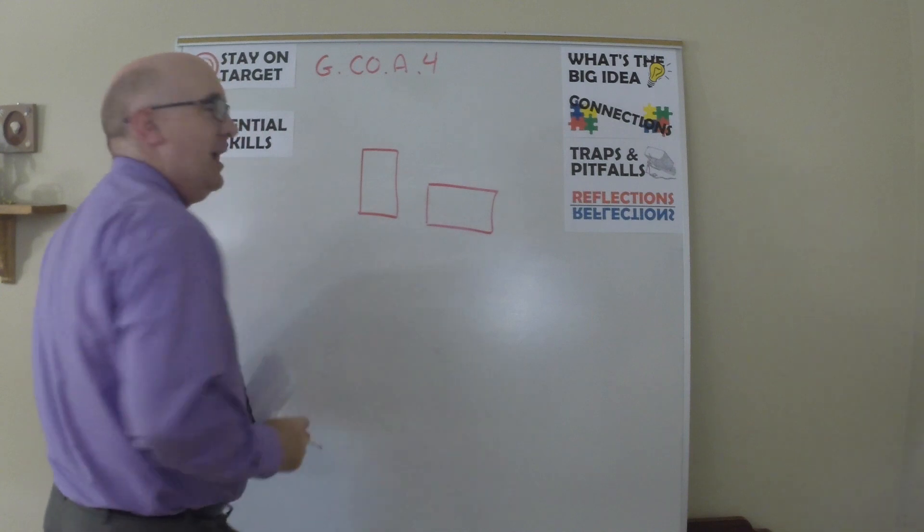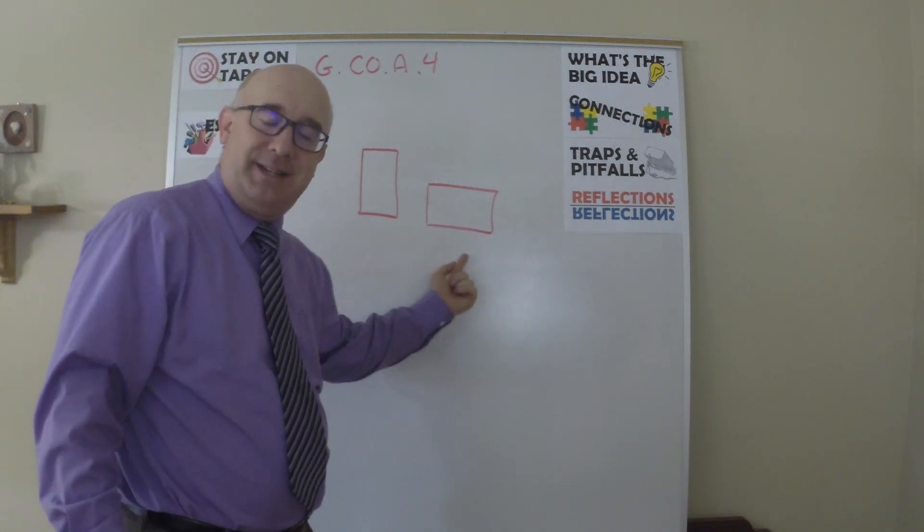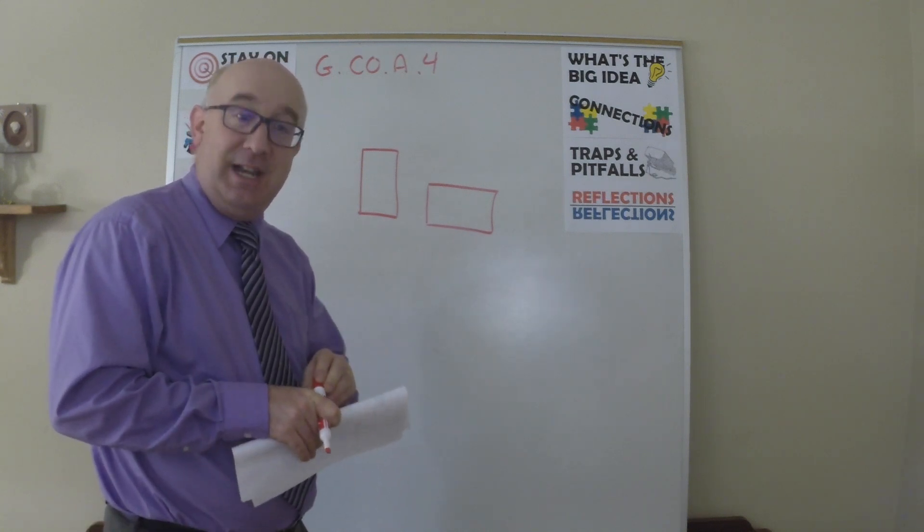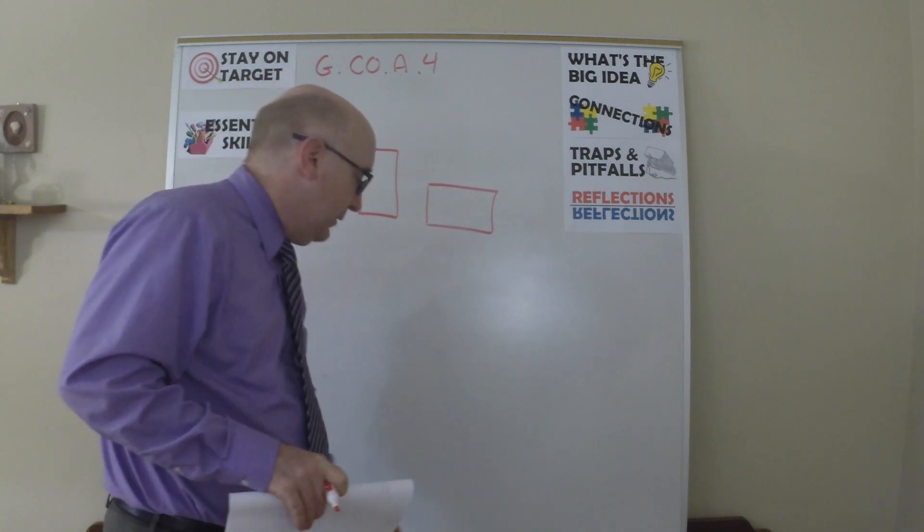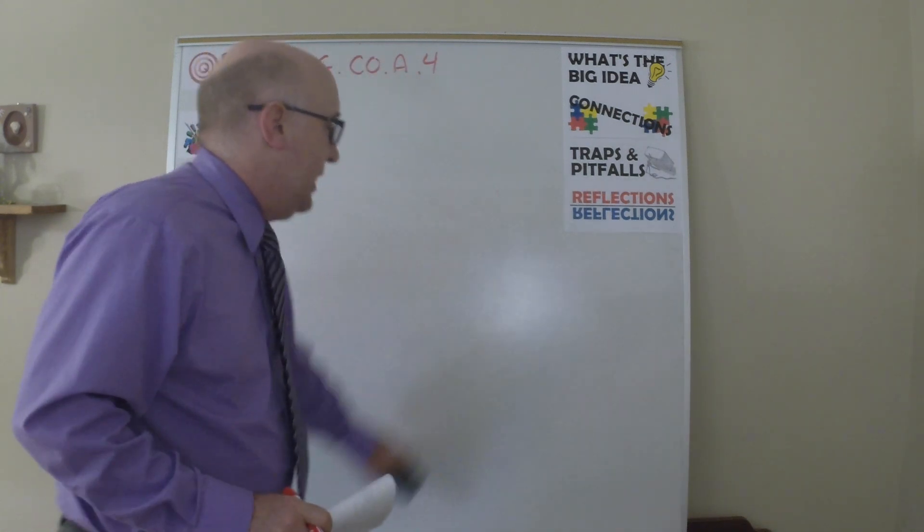In the English language, we call this portrait orientation and landscape orientation, and we say that they're different. In geometry, we wouldn't say that those are oriented differently. So let's show you what we mean by orientation.